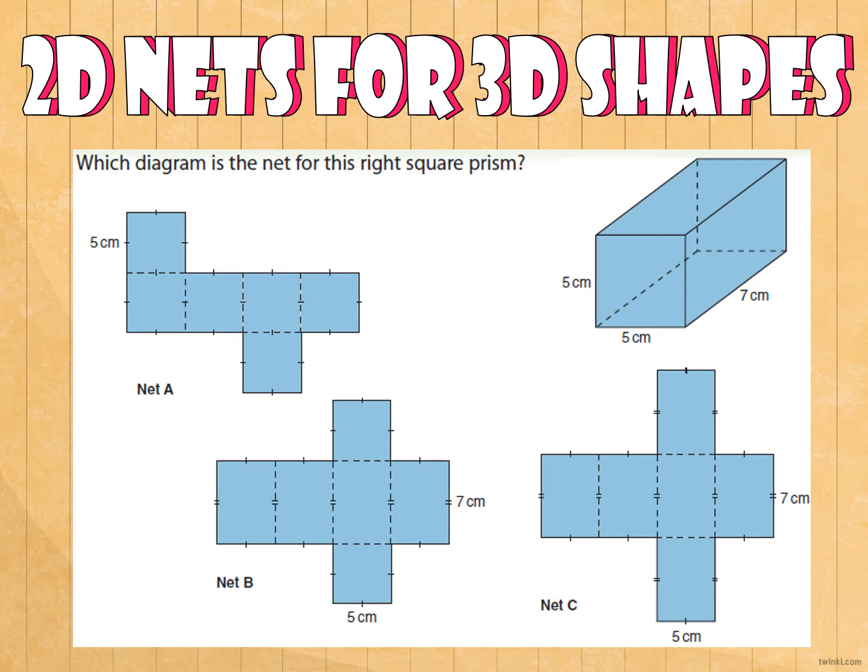Which diagram is the net for this right square prism? As you can see here, we have two squares and then one, two, three, four, four rectangles. Correct. It is net B because we have one, two, three, four rectangles and we have two squares. The answer is net B.